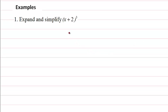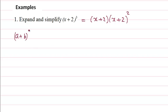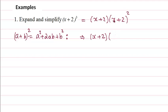We have (x + 2) all cubed, which is equal to (x + 2) times (x + 2) squared. We already learned the formula for a square: (a + b)² = a² + 2ab + b². So we're going to use this formula. We rewrite the first bracket, then expand the squared bracket: x² + 2·x·2 = 4x, then 2² = 4.